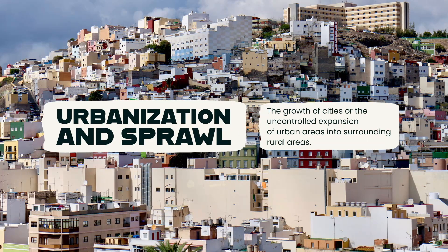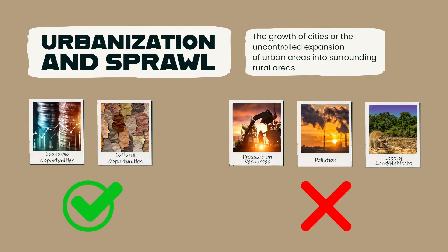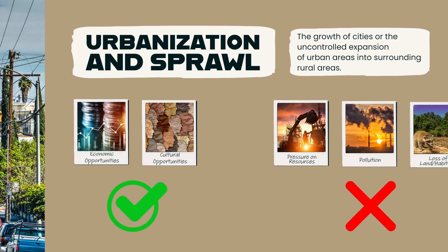Issue number one is urbanization and sprawl. One significant land use issue is urbanization, or the growth of cities, and the related issue of sprawl, or the uncontrolled expansion of urban areas into surrounding rural areas. Urbanization can bring economic and cultural opportunities, but it can also put pressure on resources and infrastructure, and contribute to environmental problems such as air and water pollution. Sprawl can also lead to the destruction of natural habitats and the loss of agricultural land.